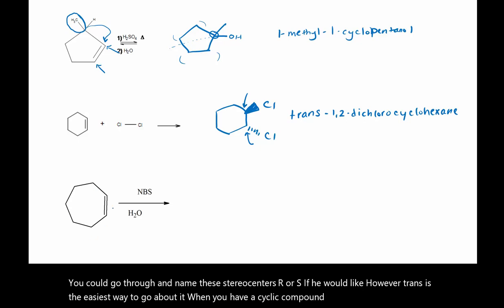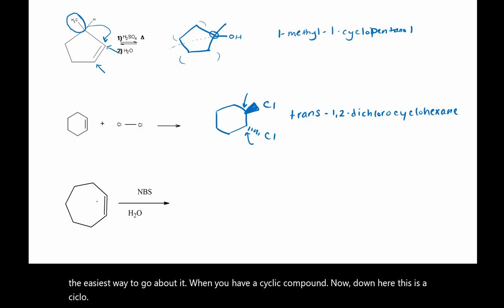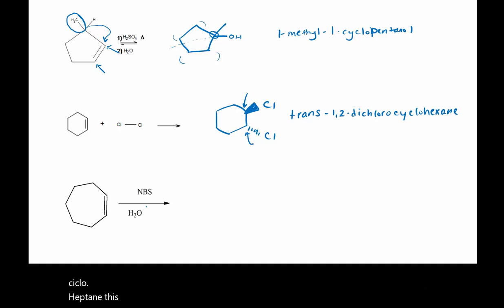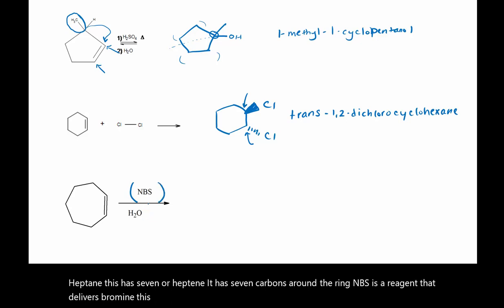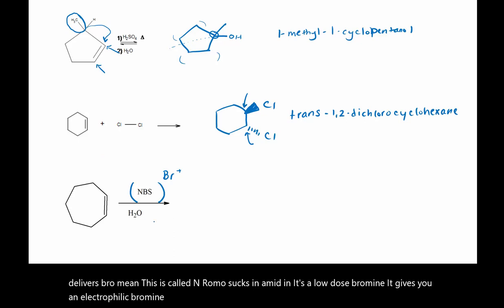Down here this is a cycloheptane — heptene — it has seven carbons around the ring. NBS is a reagent that delivers bromine. This is called N-bromosuccinimide and it's a low dose bromine. It gives you an electrophilic bromine so that the OH from the water could be nucleophilic.